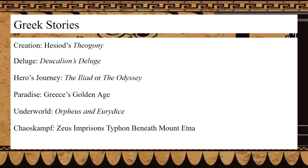And finally, the Chaos Kampf. In Hesiod's Theogony, he makes mention of a great monster named Typhon, son of Gaia and Tartarus, who carries the motif of the father of all monsters in ancient Greece, and was sent to usurp Zeus for cosmic supremacy. Zeus then buries him under Mount Etna as a result of the fight.